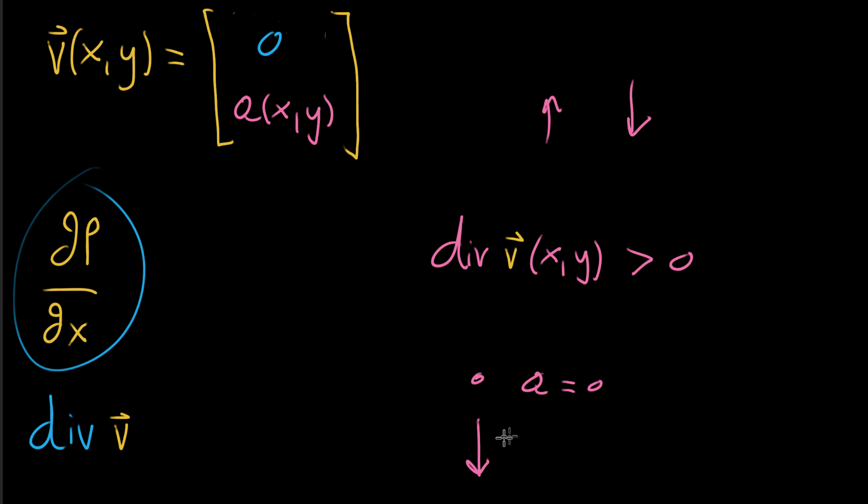but then below it, things are going away, so they're pointing down, and above it, things are going up. So in this case down here, q is a little bit less than zero, the y component of that vector is less than zero, and up here, q is greater than zero. So here we have the idea that as you're going from the bottom up, so the y value of your input is increasing as you're moving upwards in space, the value of q, this y component of the output, should also be increasing, because it goes from negative to zero to positive.